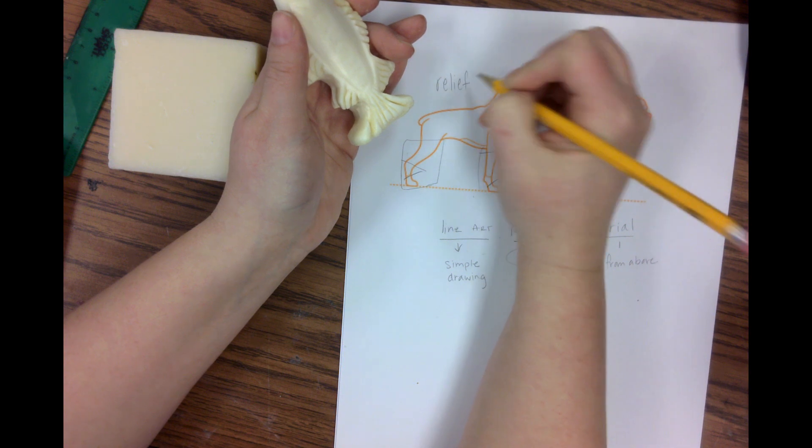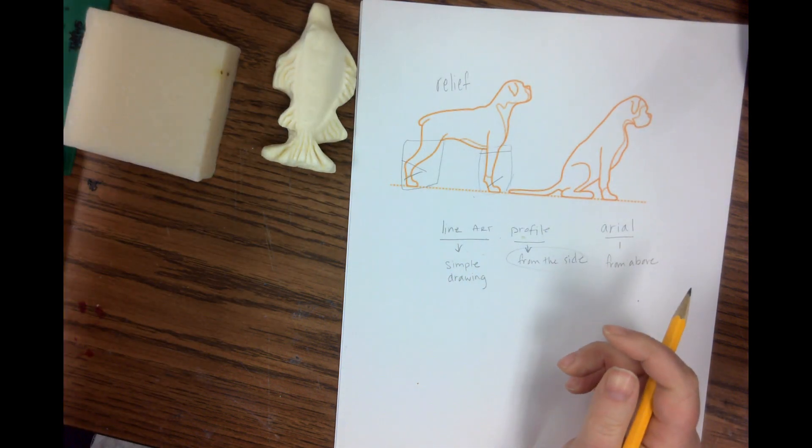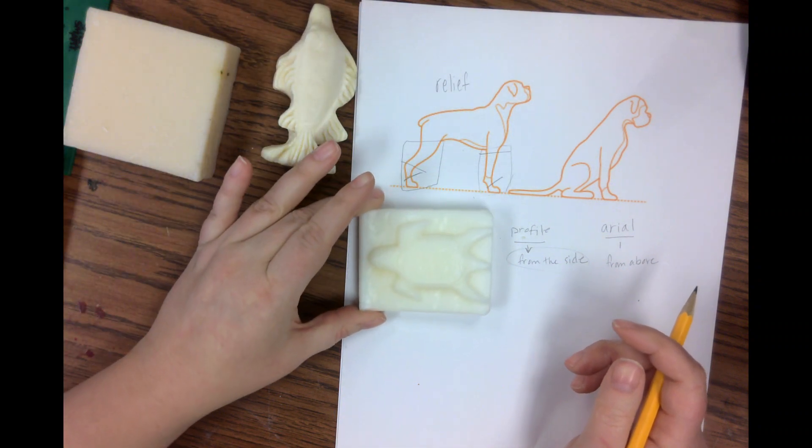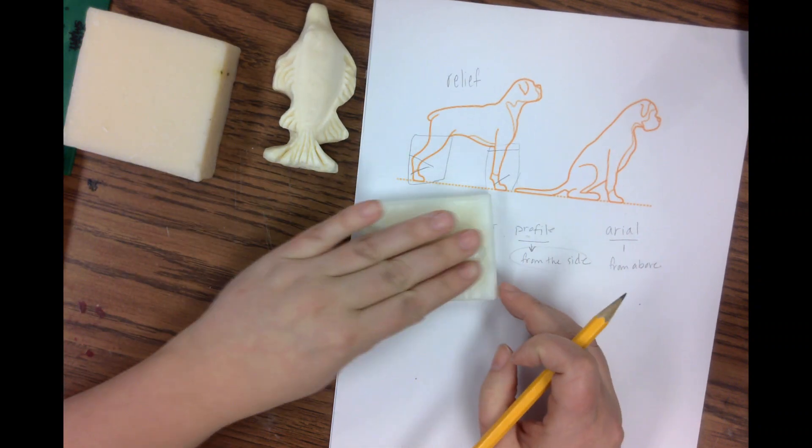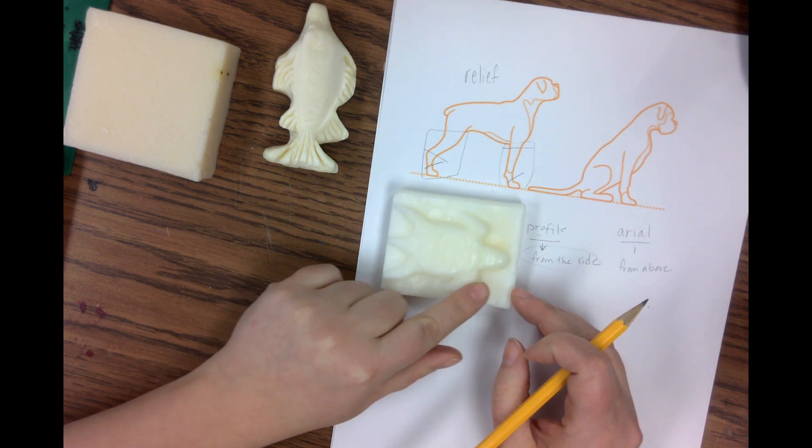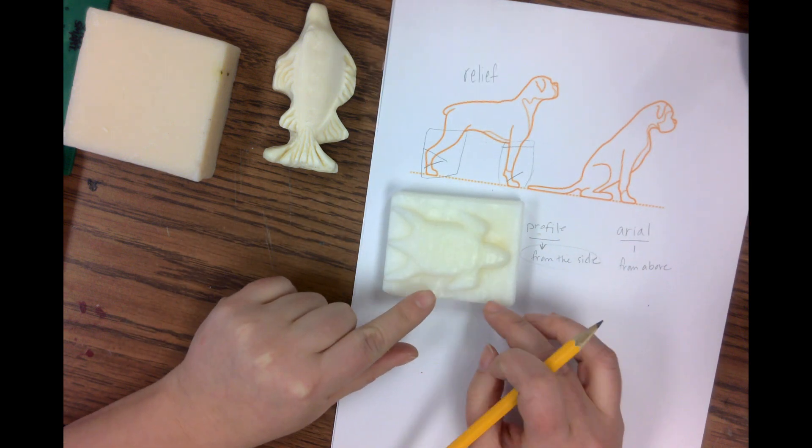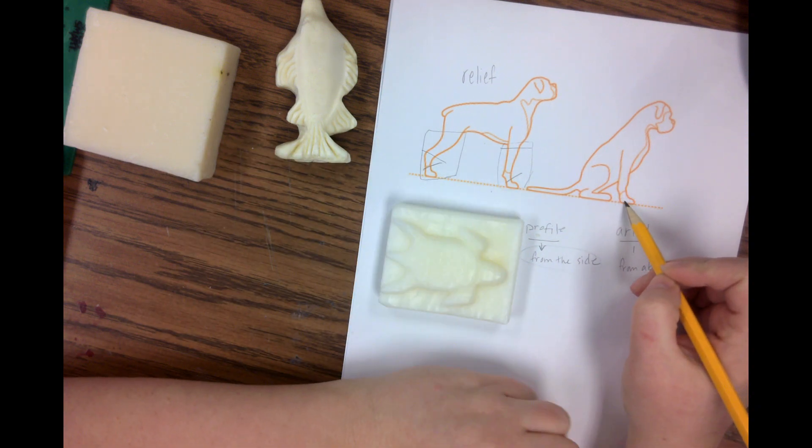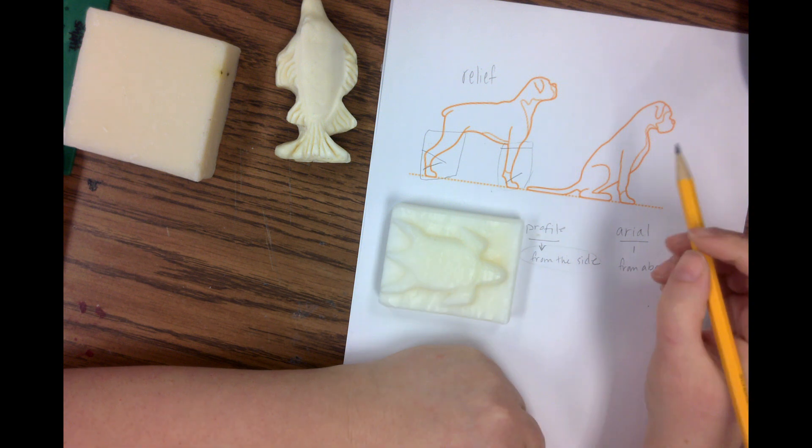So this would be perfect for a relief. So there would be like a bed of soap laying underneath of the dog, much like my turtle here, right? So he would just be laying here on the soap. We would have a picture of the dog carved in and the soap would be behind him to support. But this one here, he is a better option for an in the round.